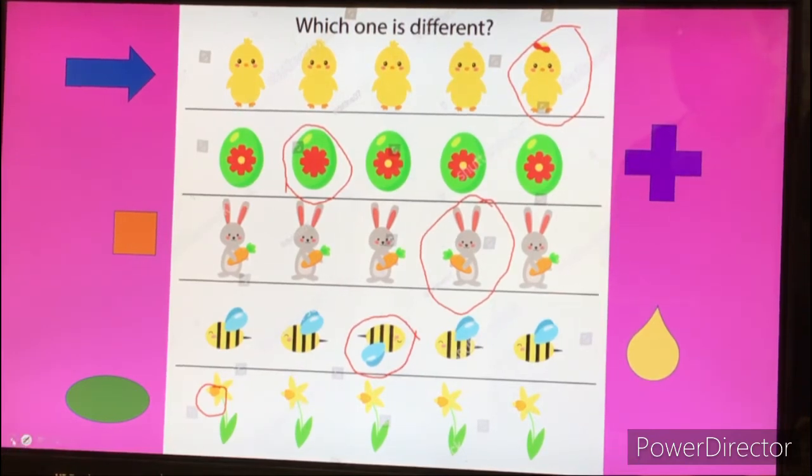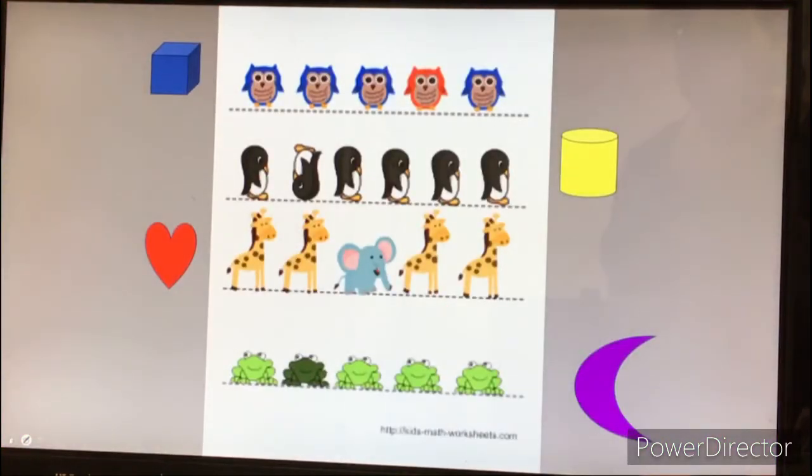Let's try another. Wow, let's move up to the blue cube. A cube is a three-dimensional square. Which one of these owls is different?